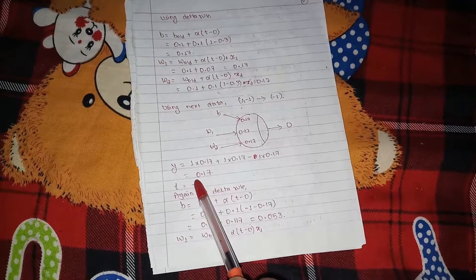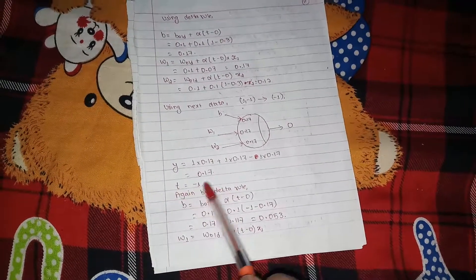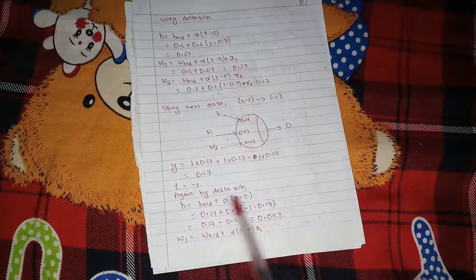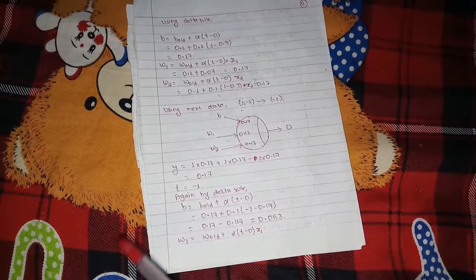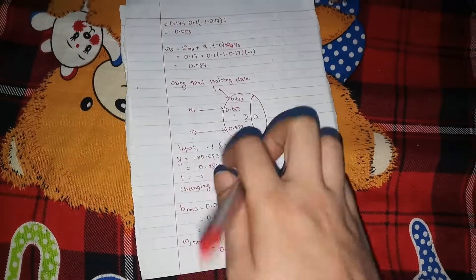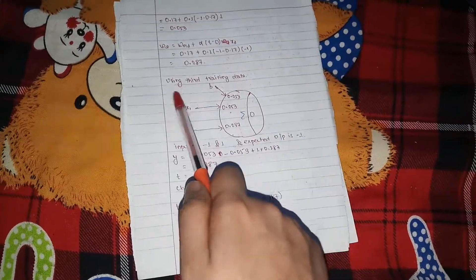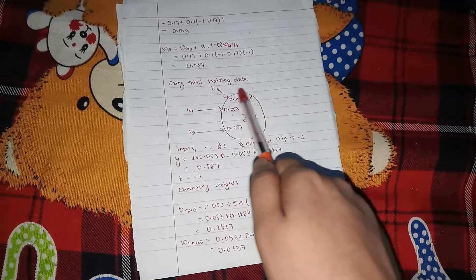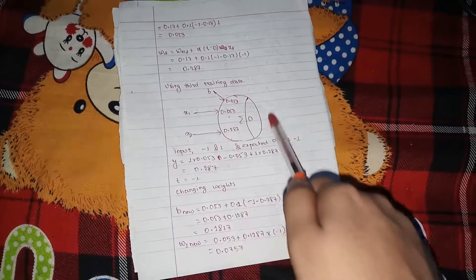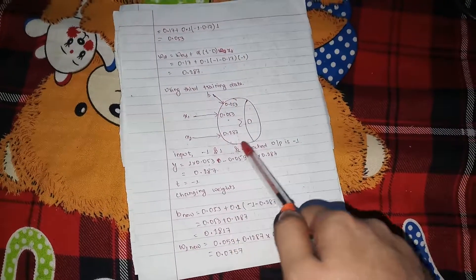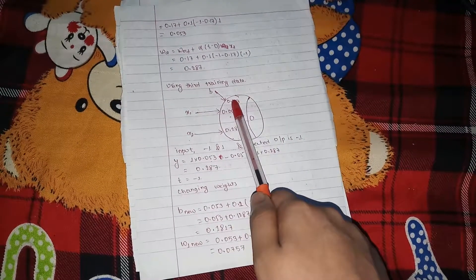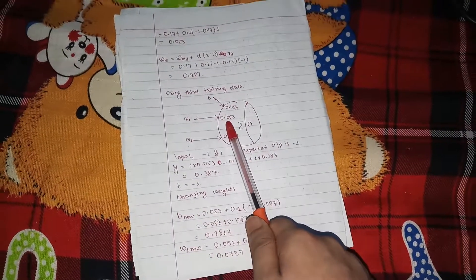The output obtained is 0.117, the next vector output is minus 1. Again, using the delta rule, we obtain the weightage of the bias, weight W1, and the W2, and then we use the thought training data set again, and we use that thought data set in order to change the weightage.